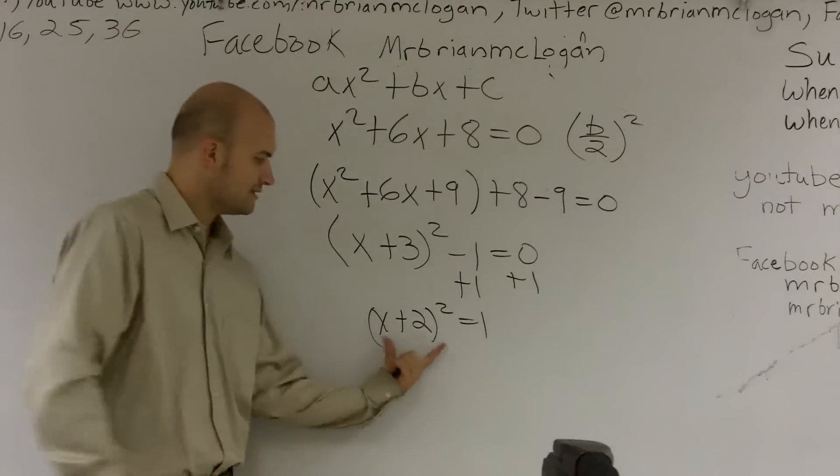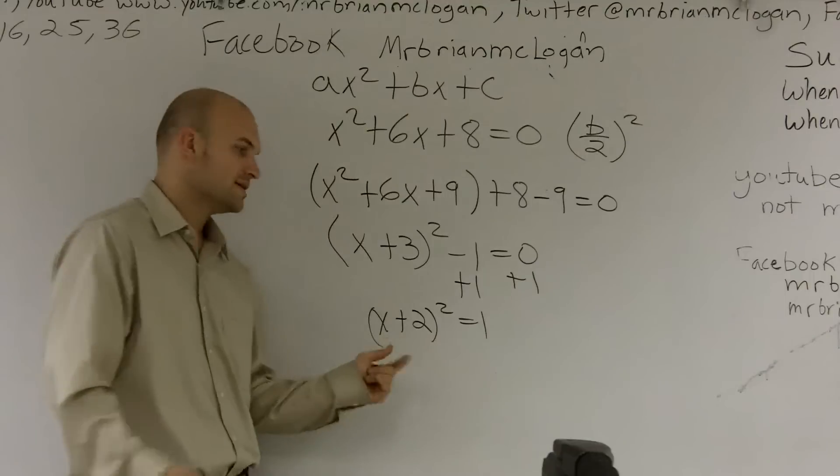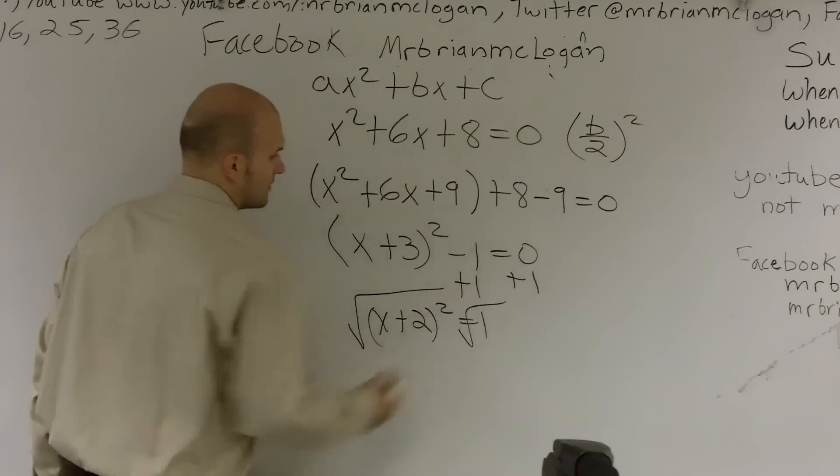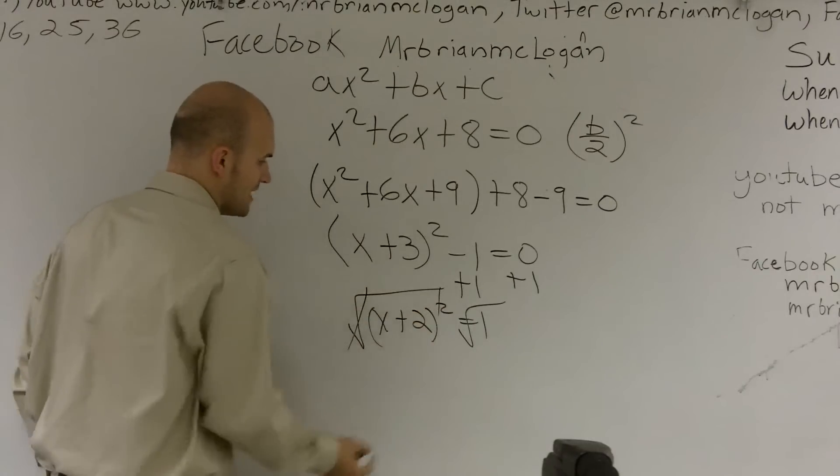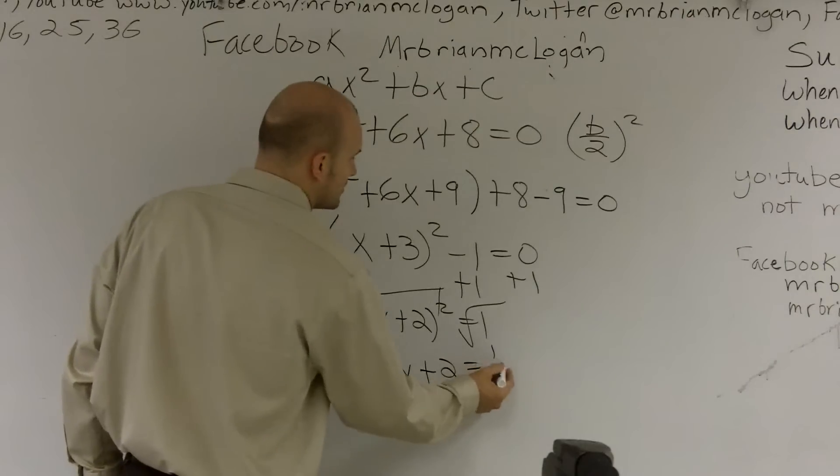So now that you can see this, the only thing I have on here is x plus 3 squared. And the reason why it's so important is, to undo my squaring, I have to take the square root. So now, a square and a square root cancel out. And I'm just left with x plus 3 equals plus or minus 1.